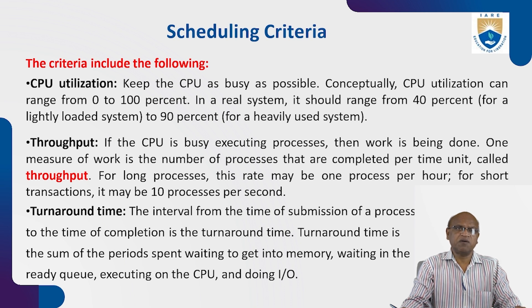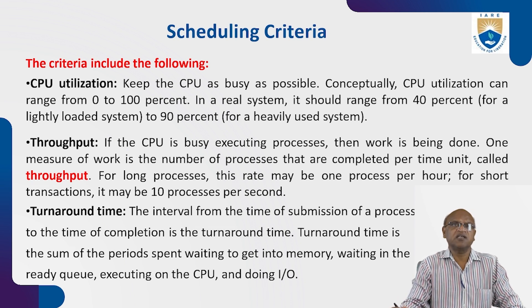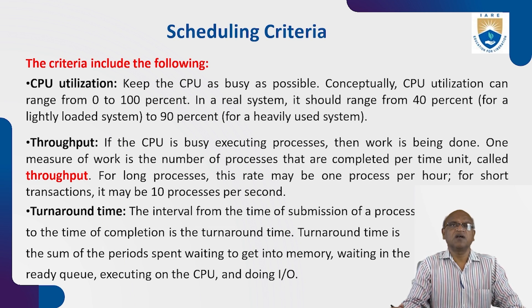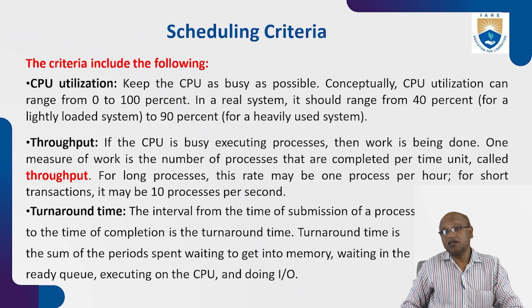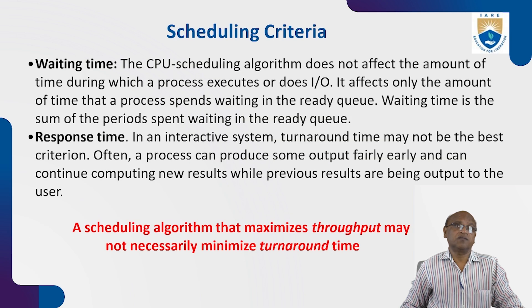Turnaround time is the interval from the time of submission of a process to the time of its completion. Turnaround time is the sum of the periods spent waiting to get into memory, waiting in the ready queue, executing on the CPU, and doing I/O. After one cycle completes, another process comes to the CPU. Turnaround time captures how much time the process spends waiting in memory, in the ready queue, executing on the CPU, and doing I/O operations.